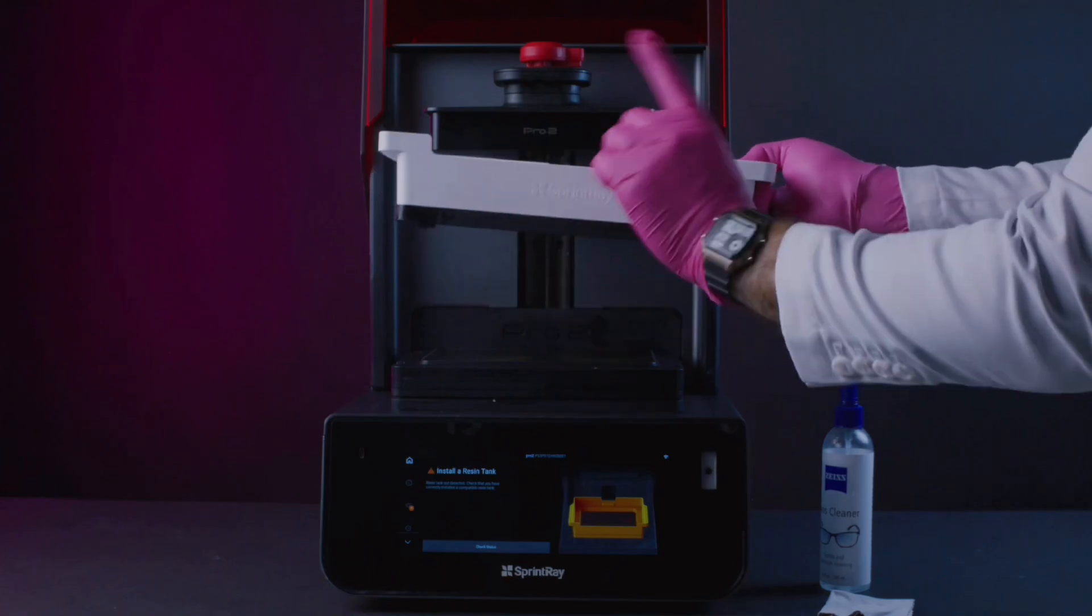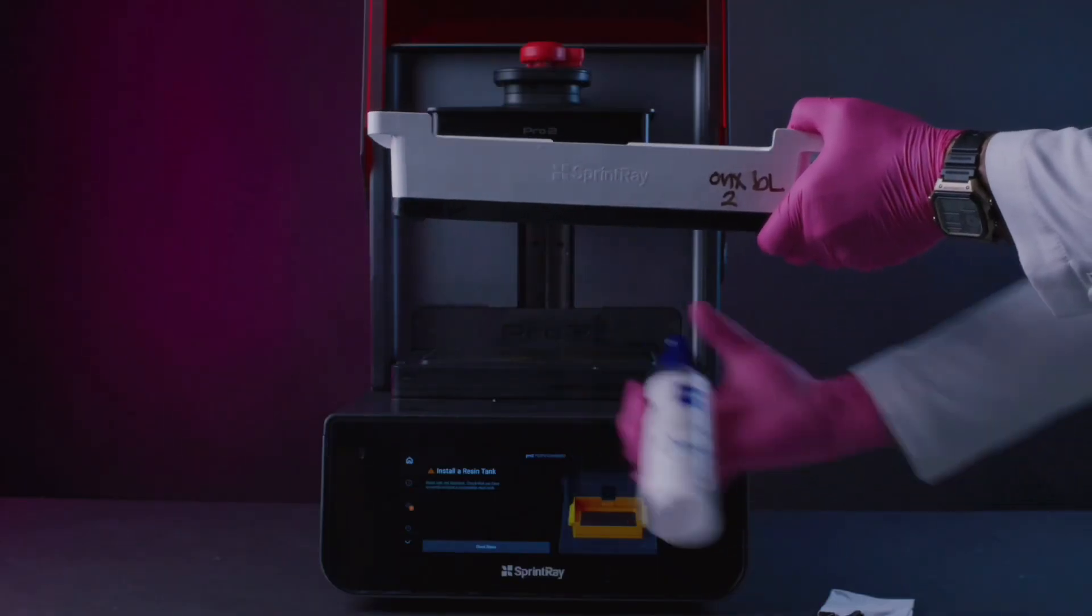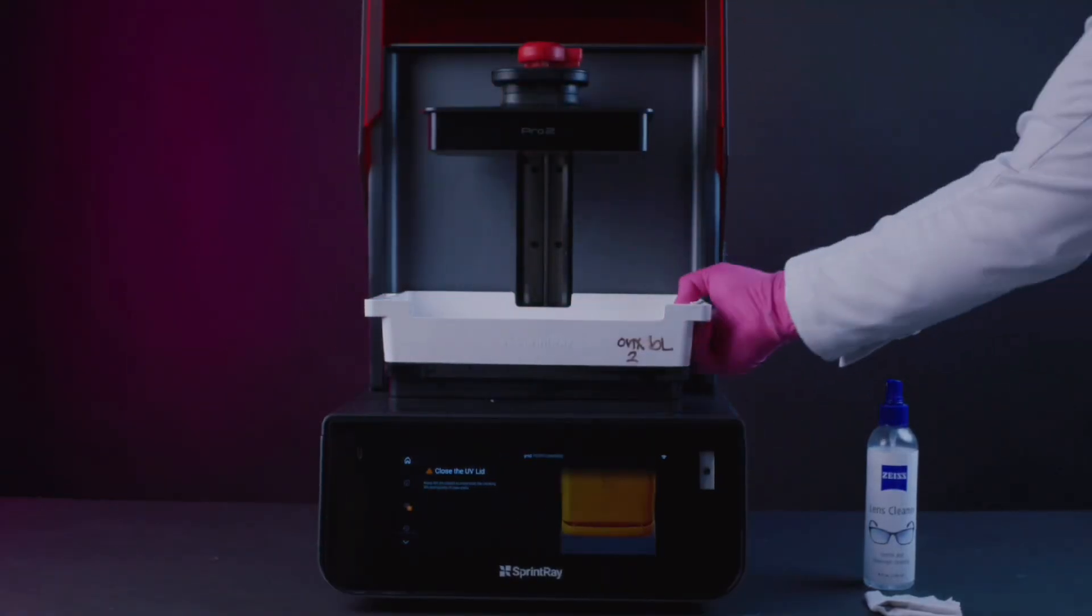Number two, fingerprints on the bottom of the resin tank are a no-no. You want to make sure that you keep that bottom tank super clean. A little bit of lens cleaner and a lint-free cloth should be all you need to make sure that there's no smudges which could make your prints not accurate.